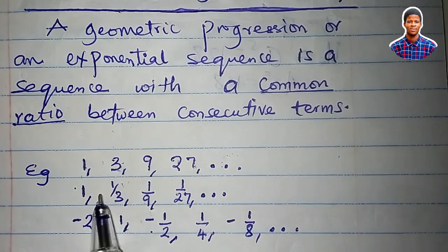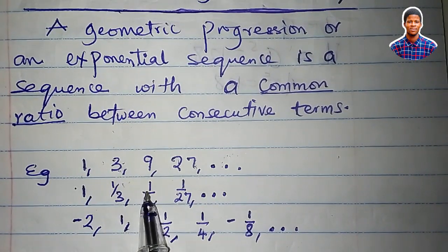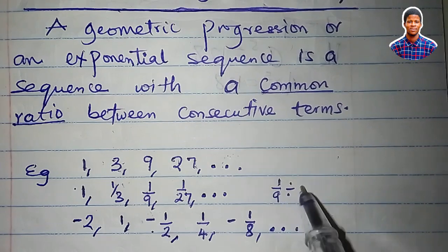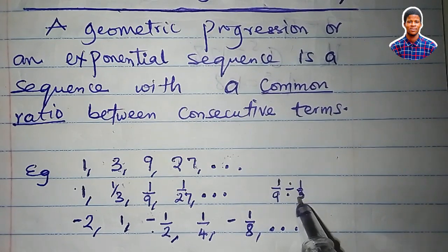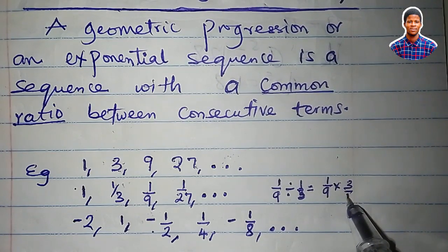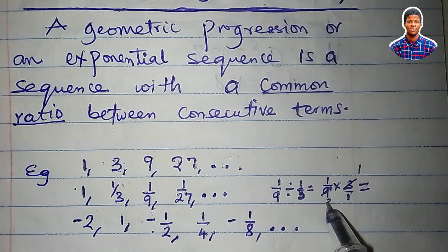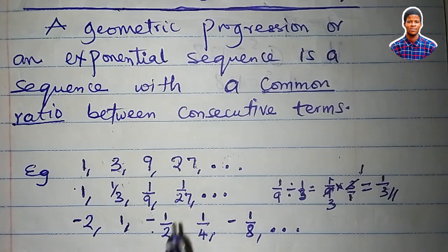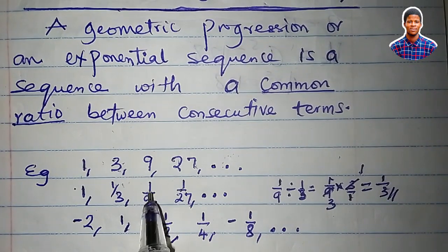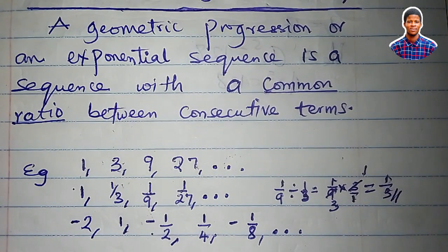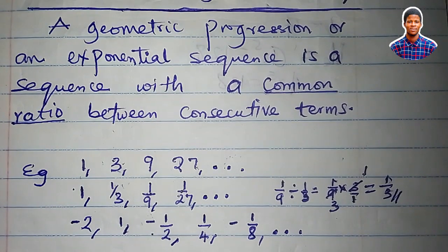The same principle applies to the second sequence. 1/3 divided by 1 is 1/3. Then 1/9 divided by 1/3: the division turns to multiplication, giving us 1/9 times 3/1, which equals 1/3. Similarly, 1/27 divided by 1/9 also gives 1/3. So you can go on and on to determine the common ratio of a geometric progression.